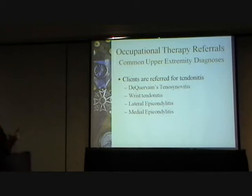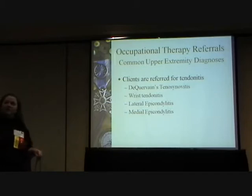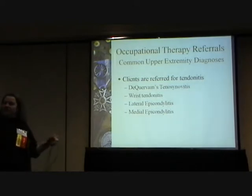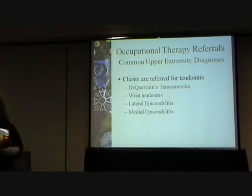Then we have the tendinitis group. Doctors are a little better — most of them know de Quervain's or thumb tendinitis and wrist tendinitis. I hear a few referrals but don't really see very much actual wrist tendinitis. And then everything comes in as lateral epicondylitis — it doesn't matter if it's on the medial side or lateral side, it doesn't matter if the little finger and ring finger are numb and tingling all the time. If it's an elbow, it must be lateral epicondylitis.